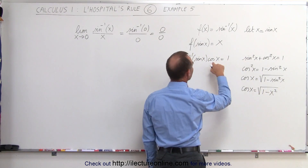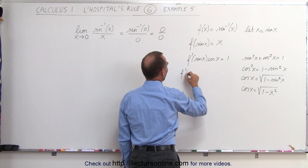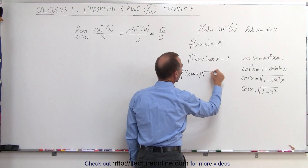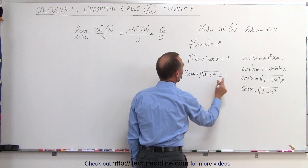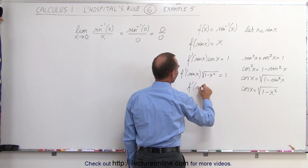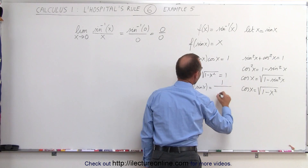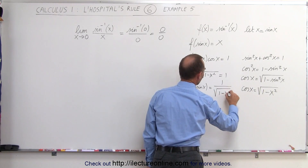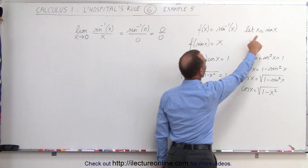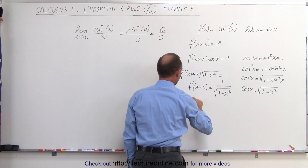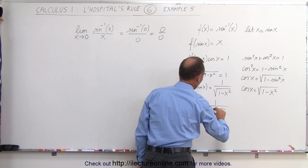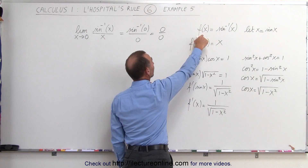We plug that in and get f prime of sine of x times the square root of 1 minus x squared equals 1. Moving that over, we have f prime of sine of x equal to 1 divided by the square root of 1 minus x squared.